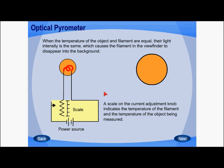As you can see, if I vary the rheostat, the filament color changes. What we have to do is make the filament color and the object color — that is, the radiation — the same.